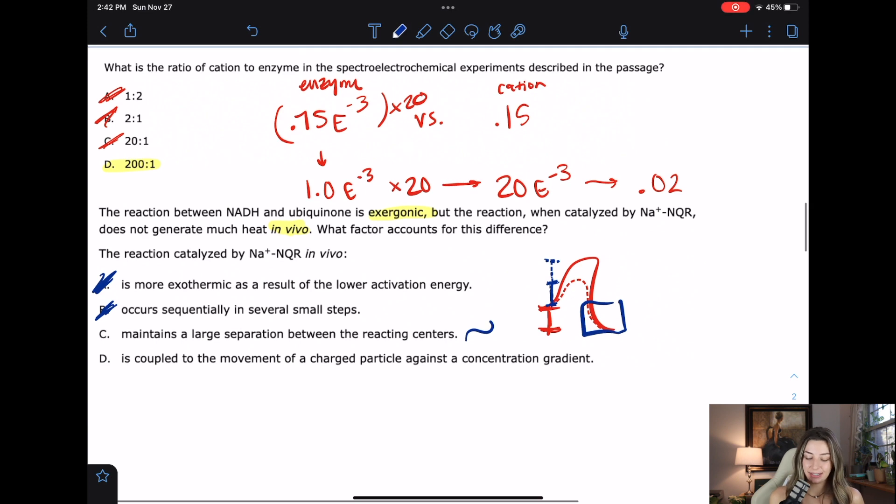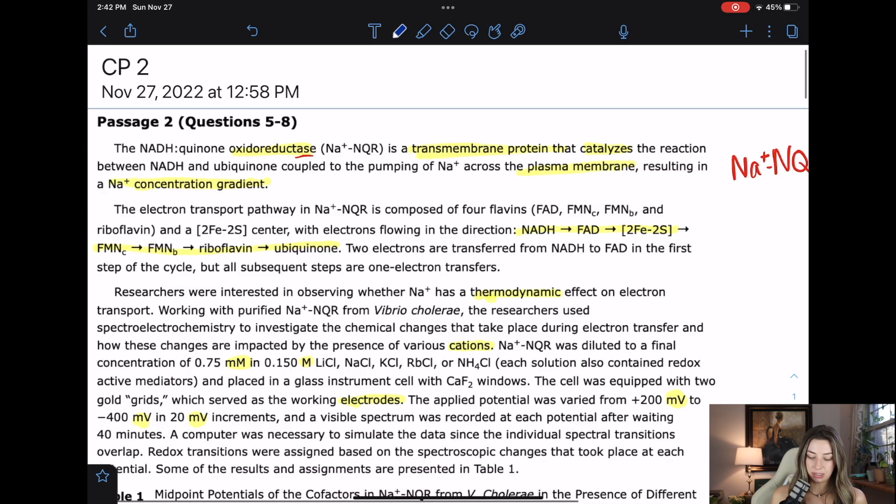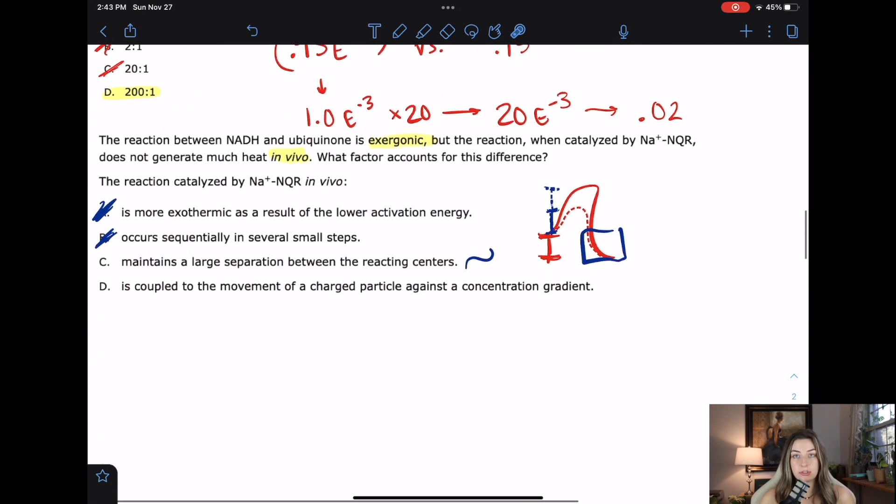D, the reaction catalyzed by it in vivo is coupled to the movement of a charged particle across a concentration gradient. So now that makes sense because we know that the reaction is coupled, right? It says it right here that the reaction is coupled to the pumping of ions across the plasma membrane. So that's probably the reason why we do this reaction in the first place. It's like the same reason why we use ATP because it's energetically favorable. And so we can kind of use that reaction to power other reactions. We couple them. So that means that that energy that's released in the exergonic reaction is actually going to be harnessed and used to move the charge particles against their concentration gradient. So we're not going to be able to measure much heat because heat is like excess energy and we don't have much excess. We've used it all. So that is a great answer.